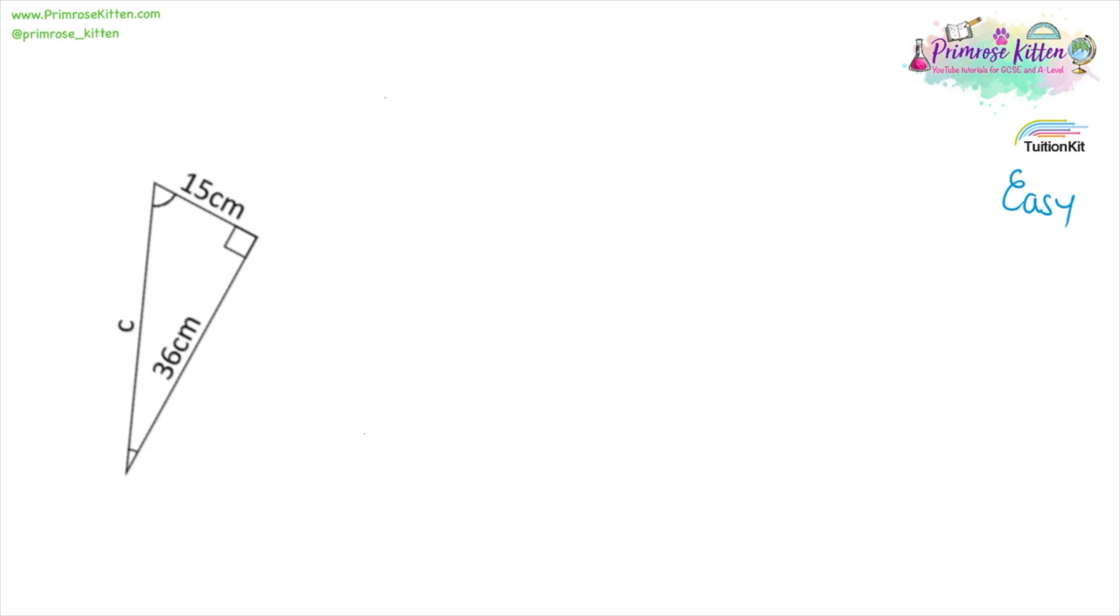In this video we're going to be using a squared plus b squared equals c squared as Pythagoras' theorem. C is always the hypotenuse, this one here, the one opposite the right angle. After that it doesn't really matter which one we label as a and b, but it's always a good idea to label them so we don't get confused. We can then pop numbers in, so a squared, 36 squared, plus b squared, 15 squared equals c squared.